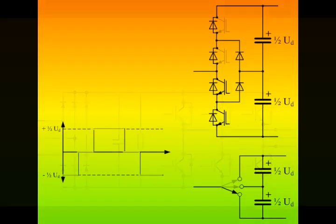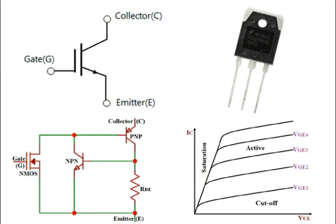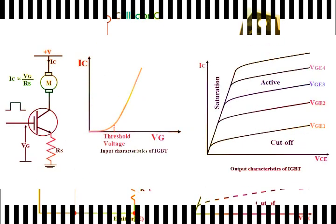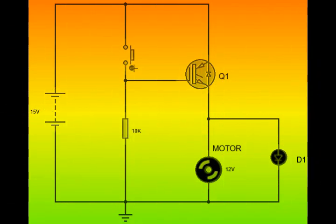Since the IGBT is a voltage controlled device, it requires only a small amount of gate voltage to remain in conduction, unlike BJT which needs constant supply of base current to stay in saturation state.